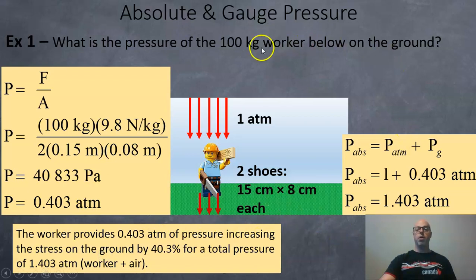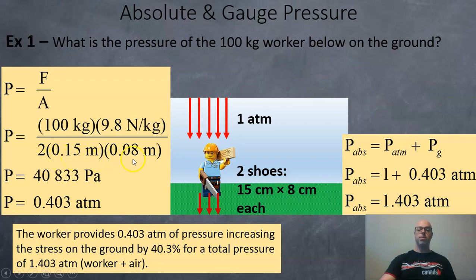Here's another example. A 100-kilogram worker is standing on the ground wearing shoes that are 15 centimeters by 8 centimeters each, with one atmosphere of pressure pushing down. The force of the worker is mass times g: 100 kg × 9.8 = 980 newtons. Divided by the surface area of two shoes (0.15 m × 0.08 m × 2), the worker exerts 40,833 pascals, or 0.403 atmospheres. So the absolute pressure on the ground is 1 atmosphere plus 0.403, giving 1.403 atmospheres — a 40.3% increase compared to normal.